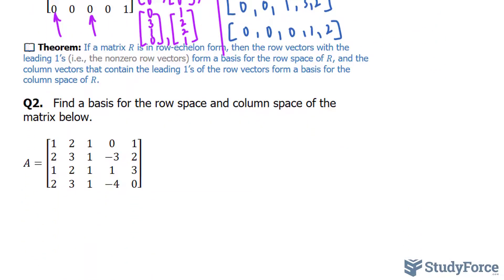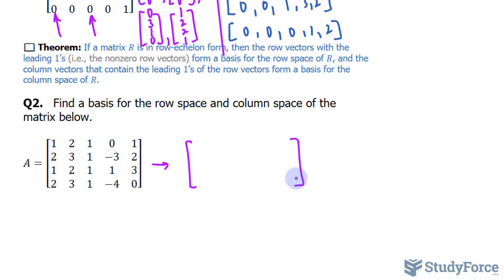Let's try to do this for question 2: find a basis for the row space and column space of the matrix below. Unfortunately, this is not in row echelon form. I'm going to assume that you already know how to put a matrix in row echelon form — if you don't, make sure you watch one of our earlier tutorials on how we do that. If you put this in row echelon form correctly, your matrix should look like this, and you can confirm this with a calculator or whatever means you want.